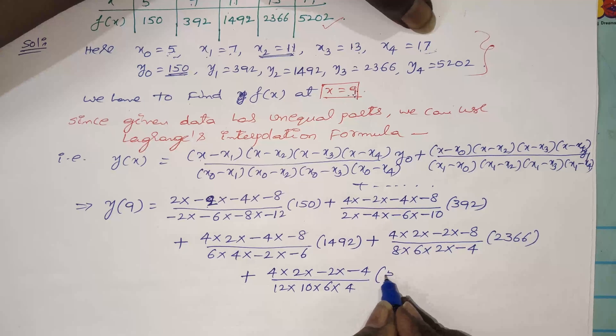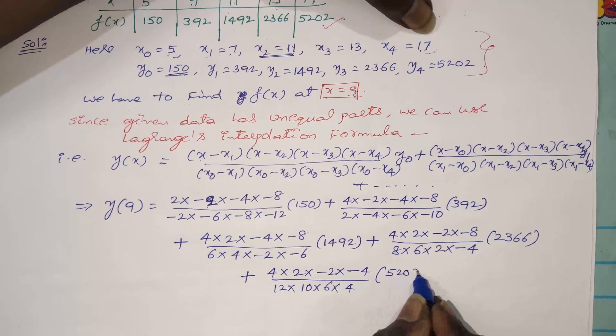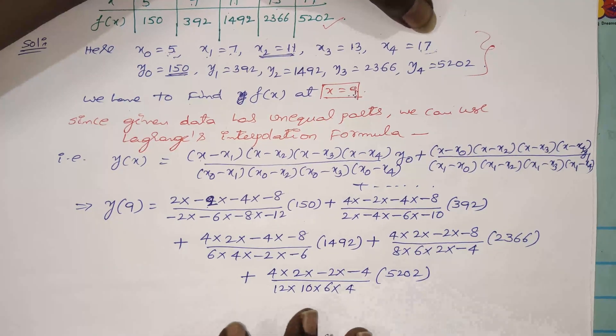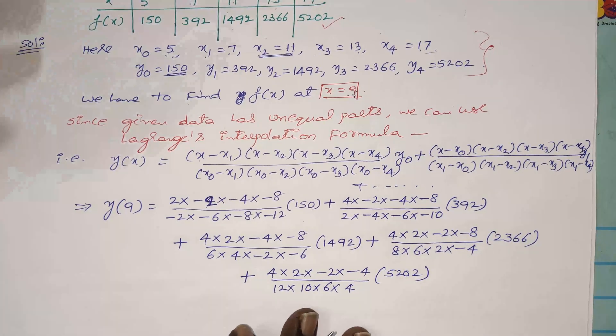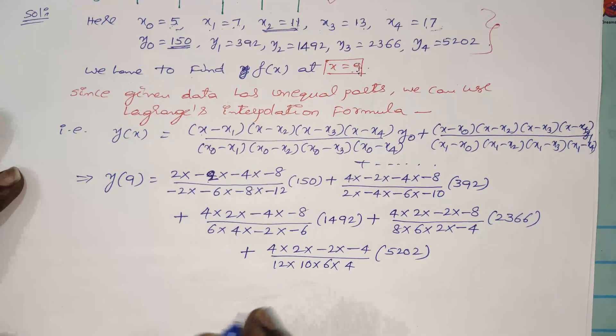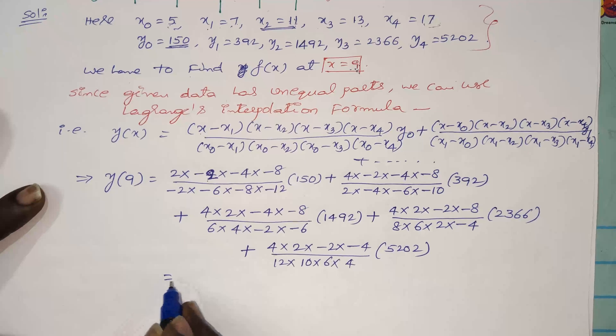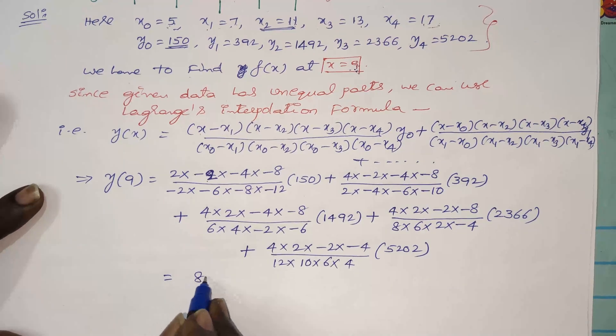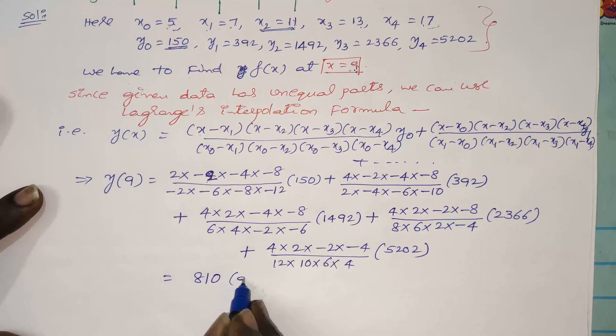The fifth term uses y4 equals 5202. Using a scientific calculator, you can easily compute that the value of y of 9 is approximately 810.